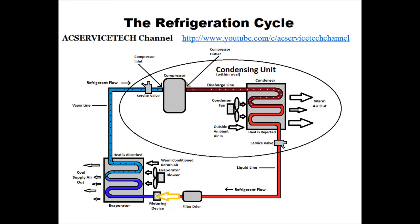After the filter dryer it hits the metering device. The metering device allows for a pressure change. You have high temperature, high pressure liquid refrigerant coming into the metering device, and it turns into a low pressure refrigerant — which automatically makes it a low temperature as well. If you decrease pressure, then temperature will decrease. The metering device is only going to allow a small amount through, and it turns into a low pressure, low temperature, 80% liquid, 20% flash gas mix — mainly a low temperature, low pressure liquid.